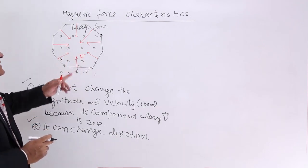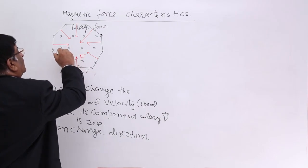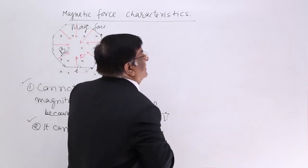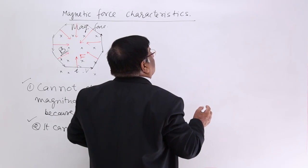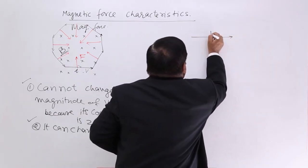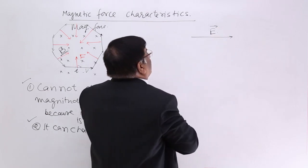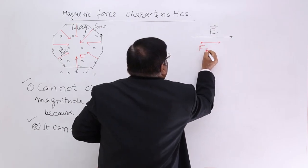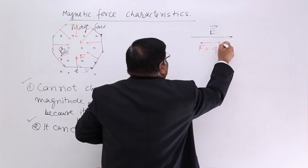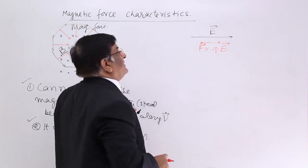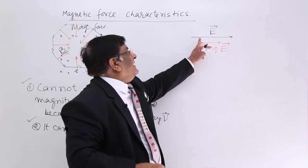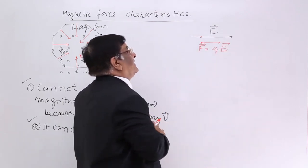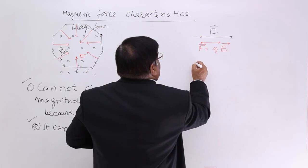Now what happens in an electric field? In magnetic field we have seen the above behavior. Now if there is an electric field in a particular direction, a charge in it experiences a force, and the direction of that force is the direction of the electric field. If a particle is there, it experiences a force in the direction of electric field, and that force gives it acceleration.